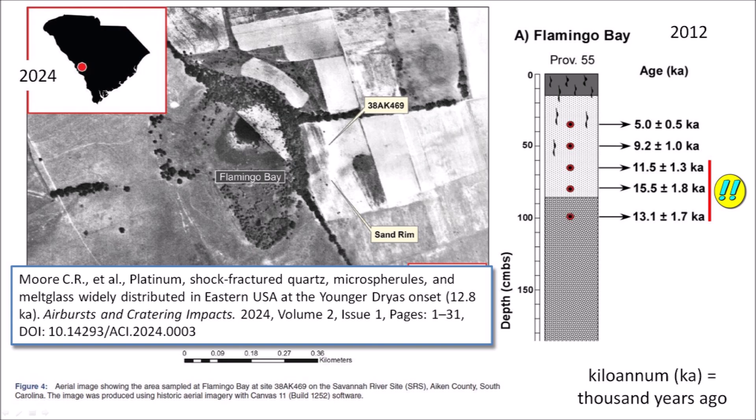Finally, a 13.1 kPa OSL date at 100 cm below the surface statistically overlaps with the 15.5 kPa data higher in the profile, possibly indicating a thicker package of potentially younger dry-eolian-age sediments within the upper meter of the sand rim at Flamingo Bay. Notice that the interpretation of the inverted stratigraphy does not consider that the rim of the bay is an overturned flap created by an impact — this will be discussed in greater detail later.